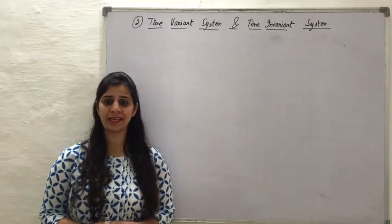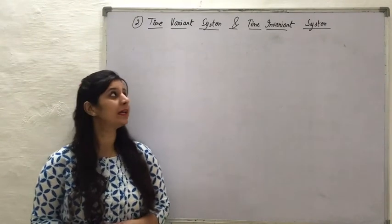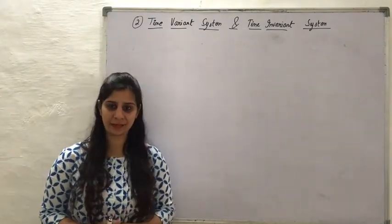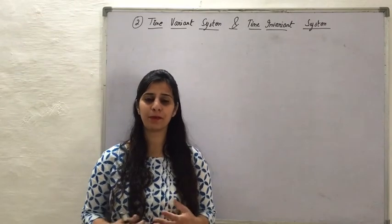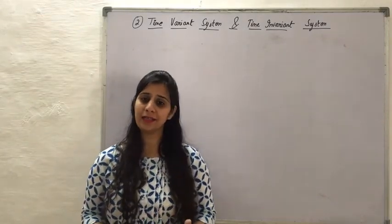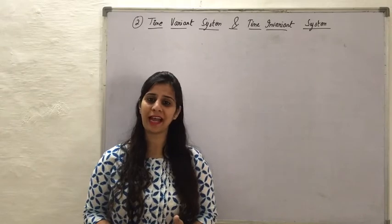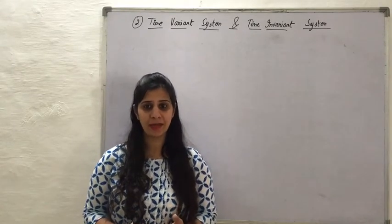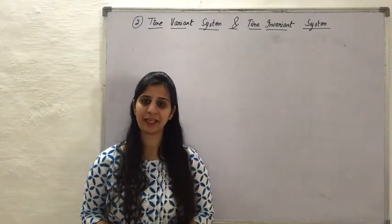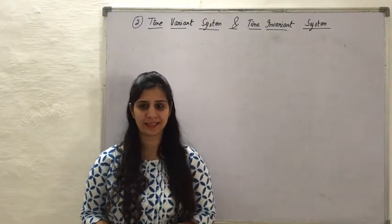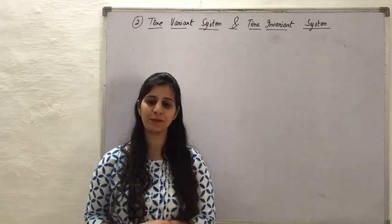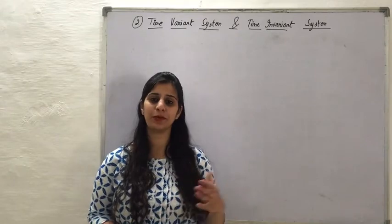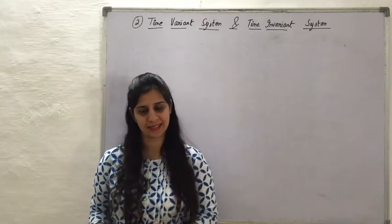This video lecture is about the second type of classification of systems: time variant system and time invariant system. If the response of a system for a particular input is independent of the time at which the input is applied, that means the output remains the same irrespective of the time, it is called a time invariant system. If the system's response towards a particular input changes with the time at which the input is applied, then it is called a time variant system.